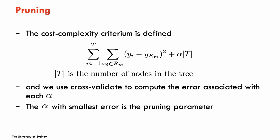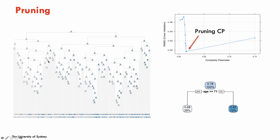In the example using age to predict BMD, we have the full grown tree. Cross-validation computes the root mean square error associated with different alpha values. The best alpha — the one with lowest RMSE — is around 0.02, and that corresponds to a very simple tree with just one split. According to the cross-validation criteria for the cost complexity function, this is the tree with the best root mean square error.